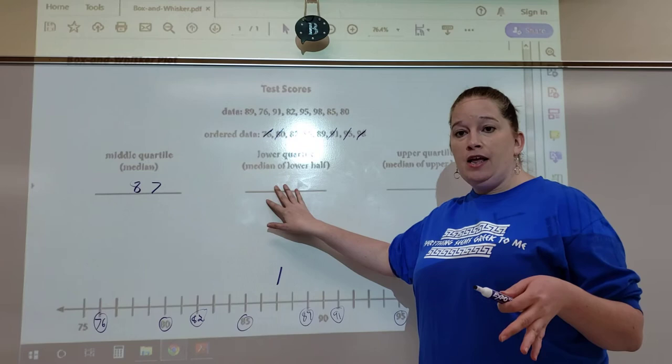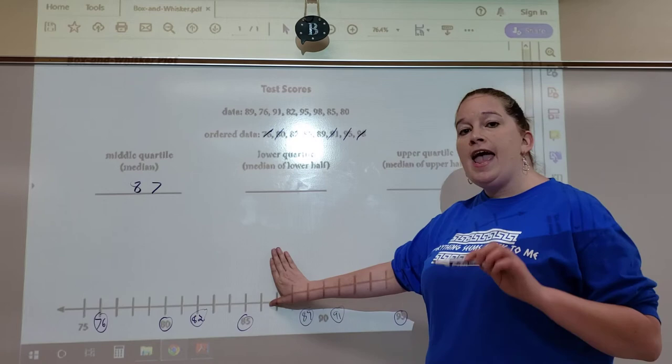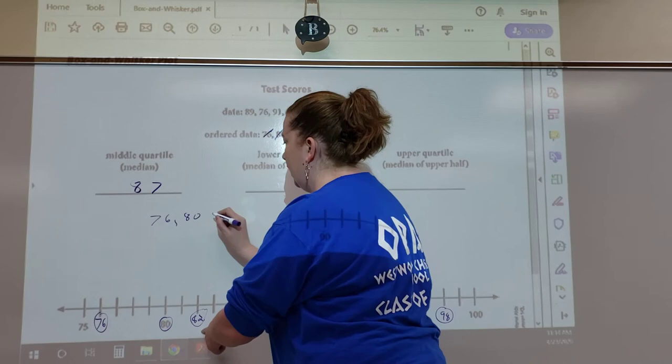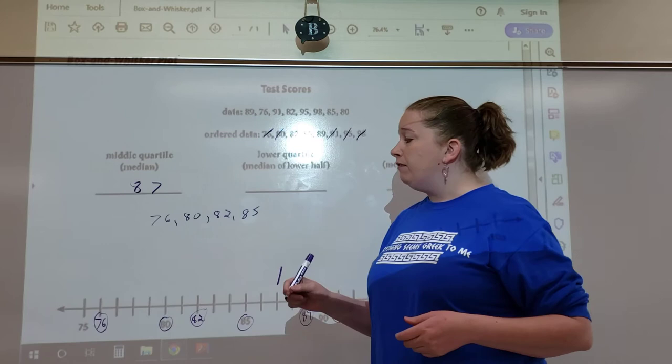To find the lower quartile, you're going to find the median of the lower numbers. This is important: you can't include your median. So forget that. Any number to the left of that, we have four numbers: 76, 80, 82, and 85. Those are all the numbers on the lower half.